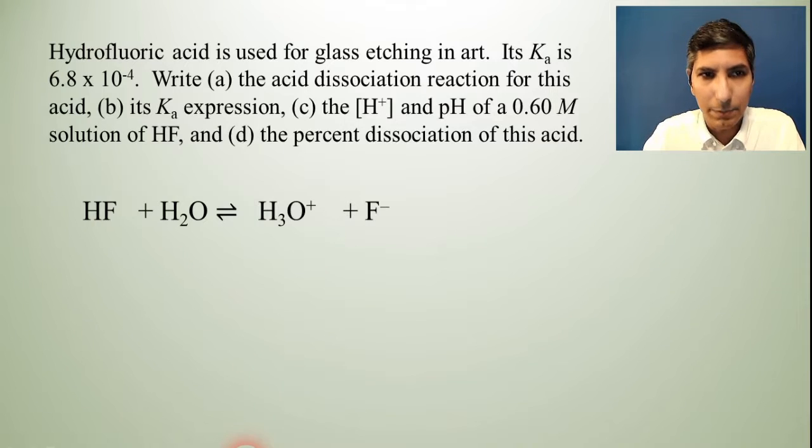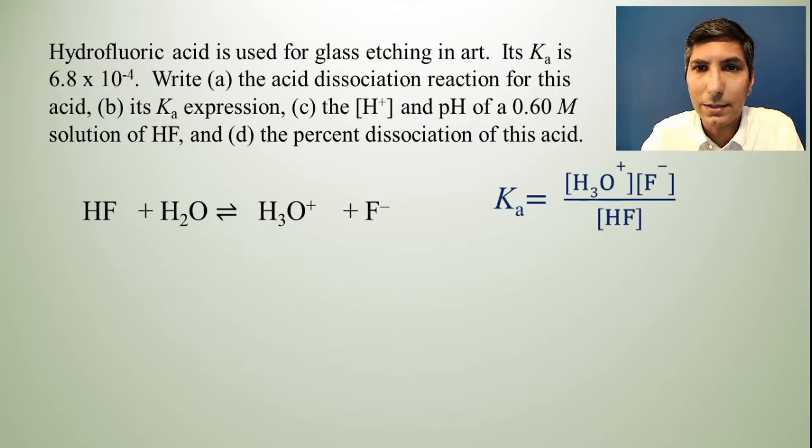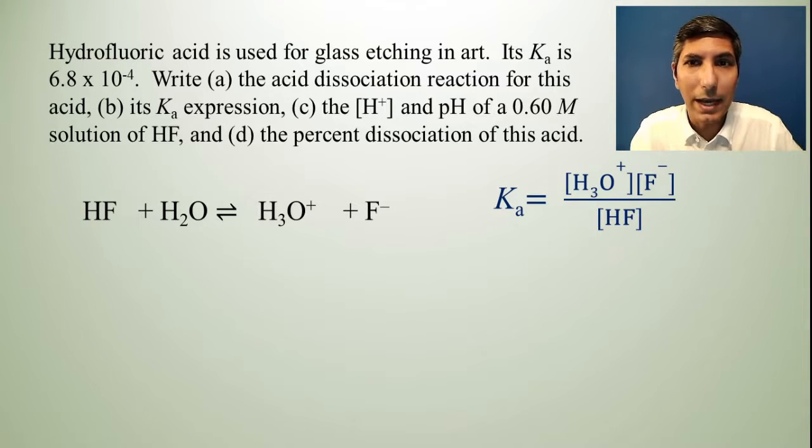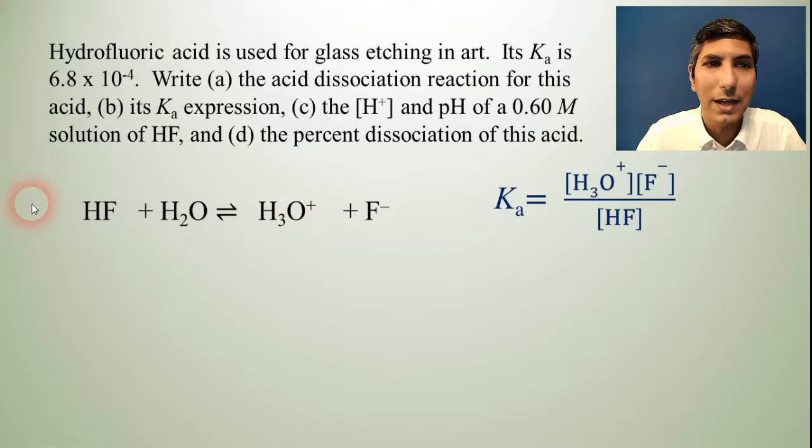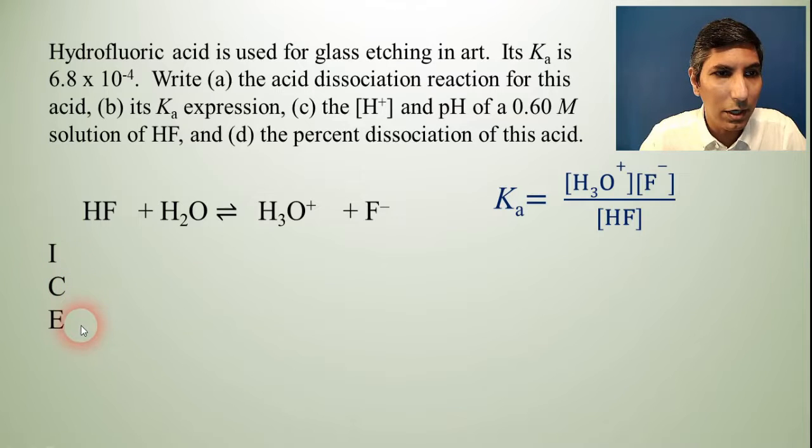Now the Ka expression is just products over reactants. There are no coefficients in this one. We're going to leave out water because it's a liquid. So there's our Ka expression, just like it would be for any equilibrium constant expression. Now part C, this is the bread and butter of this problem, the H+ and pH of a 0.60 molar solution of HF. So we're going to use an ice box for this. That stands for initial change and equilibrium.